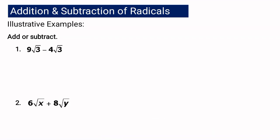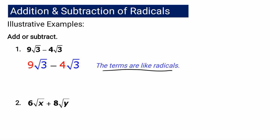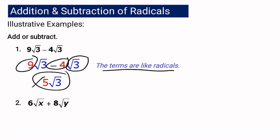Let us have the following examples. Number 1: if I have 9 square root of 3 minus 4 square root of 3, obviously the terms are like radicals — they have the same radicand and the same index, square root of 3. So you are just going to subtract based on the given. The answer here is 5 square root of 3. You just subtract the numerical coefficients: 9 minus 4 is 5, and then you affix the common radical, which is square root of 3. So the answer is 5 square root of 3.